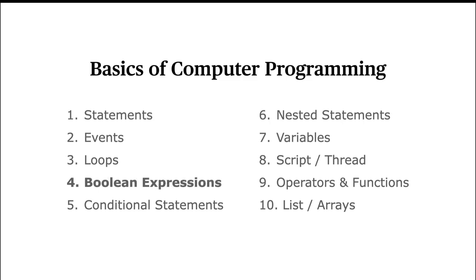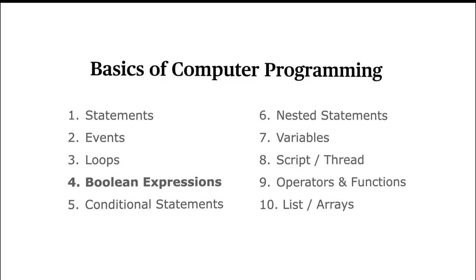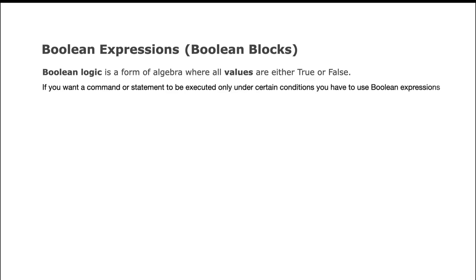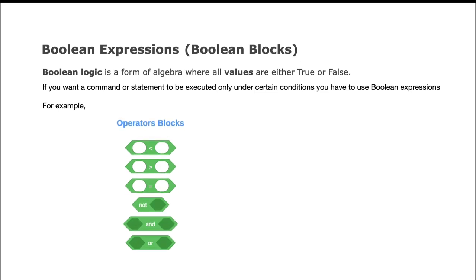In this video let's look at the next basic concept in computer programming called Boolean expressions. Boolean logic is a form of algebra where the value can only be true or false. In computer programming, if you want a command or a statement to be executed only under certain conditions, you use Boolean expressions. For example, the mathematical operator blocks in Scratch are Boolean expressions — they check whether a number is less than, greater than, or equal to, and the outcome will be true or false.